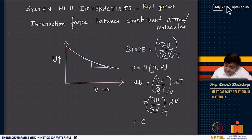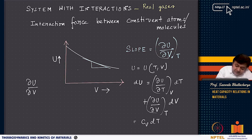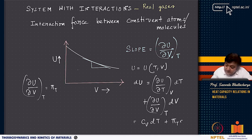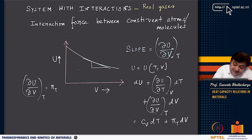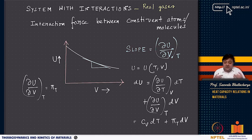Since dU is an exact differential, if U is a function of T and V, we can write dU equals (del U / del T)_V dT plus (del U / del V)_T dV. The first term equals Cv dT. We call (del U / del V)_T as pi_T. In ideal gases pi_T is zero because there is no interaction force between molecules — only kinetic energy and temperature change the internal energy.